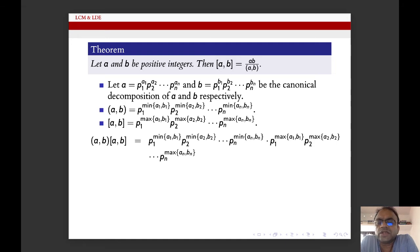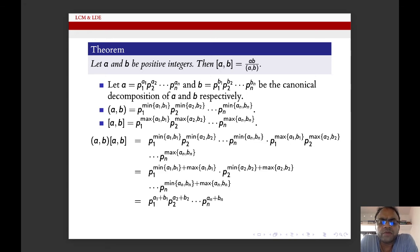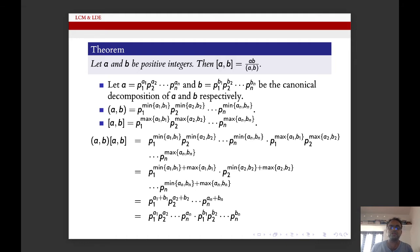Therefore GCD(a,b) × LCM(a,b) = P₁^(min(A₁,B₁)+max(A₁,B₁)) · P₂^(min(A₂,B₂)+max(A₂,B₂)) · … · Pₙ^(min(Aₙ,Bₙ)+max(Aₙ,Bₙ)). By the law of exponents, since min(x,y) + max(x,y) = x + y, this equals P₁^(A₁+B₁) · P₂^(A₂+B₂) · … · Pₙ^(Aₙ+Bₙ), which is nothing but a × b. Therefore LCM(a,b) × GCD(a,b) = a × b.